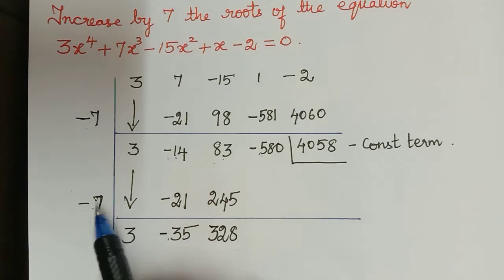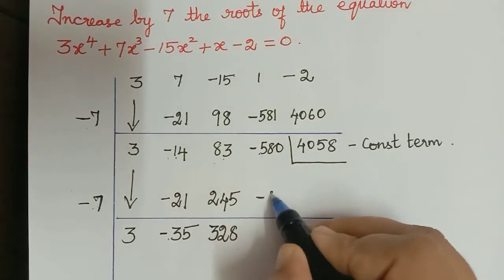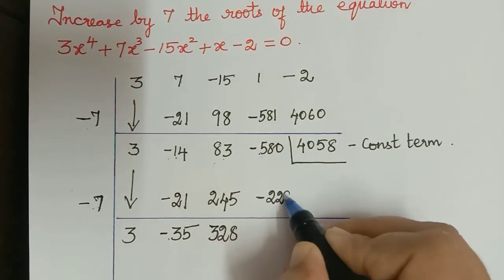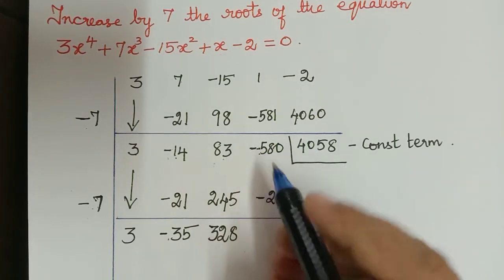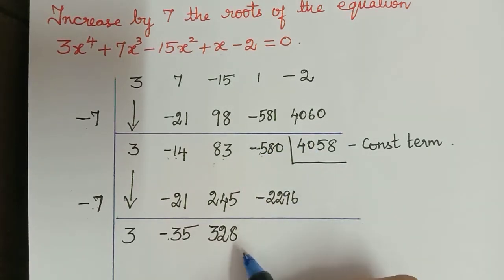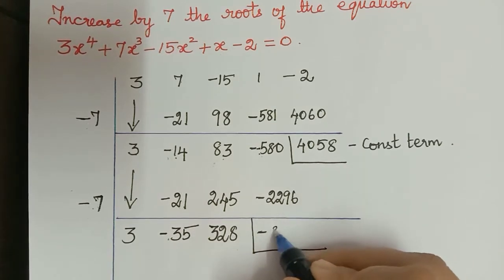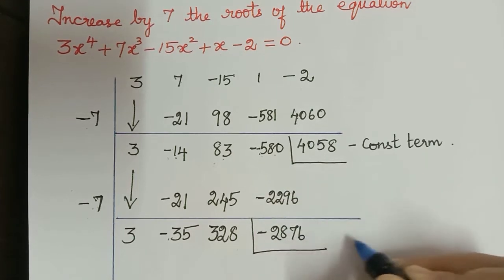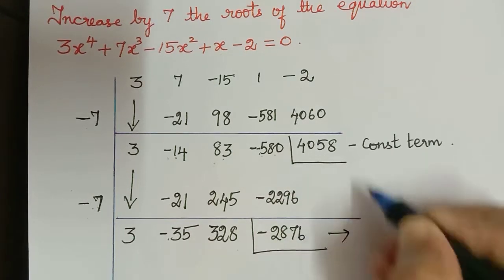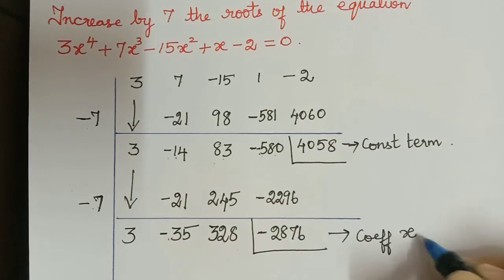Now 328 multiplied with negative 7 gives negative 2296. Here we have a negative sign and there also we have a negative sign, so we add and write the negative sign. The addition of these two numbers gives 2876, which is the coefficient of the x term.